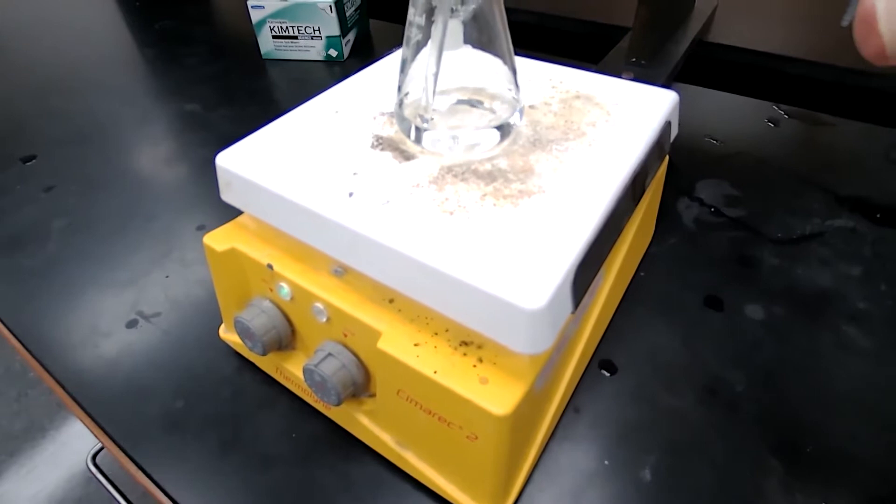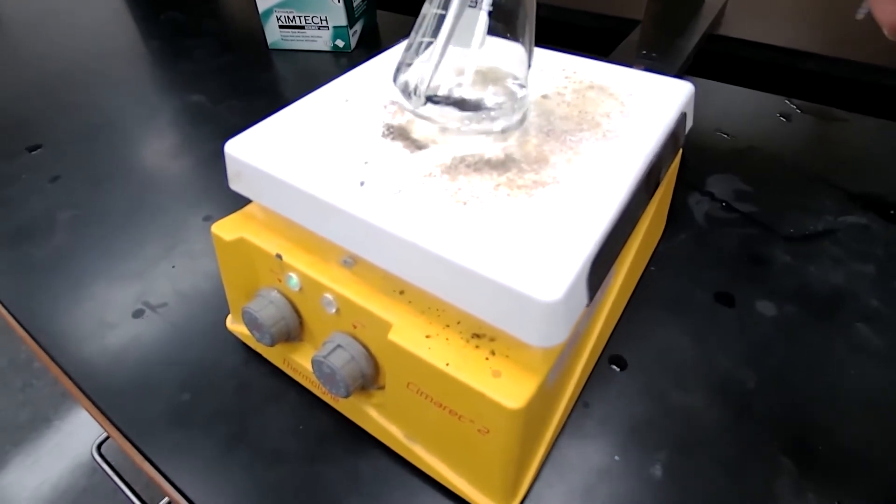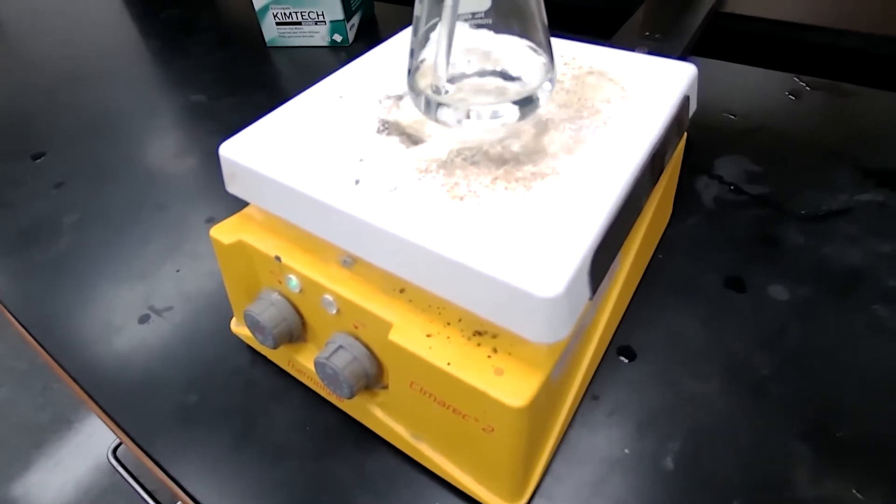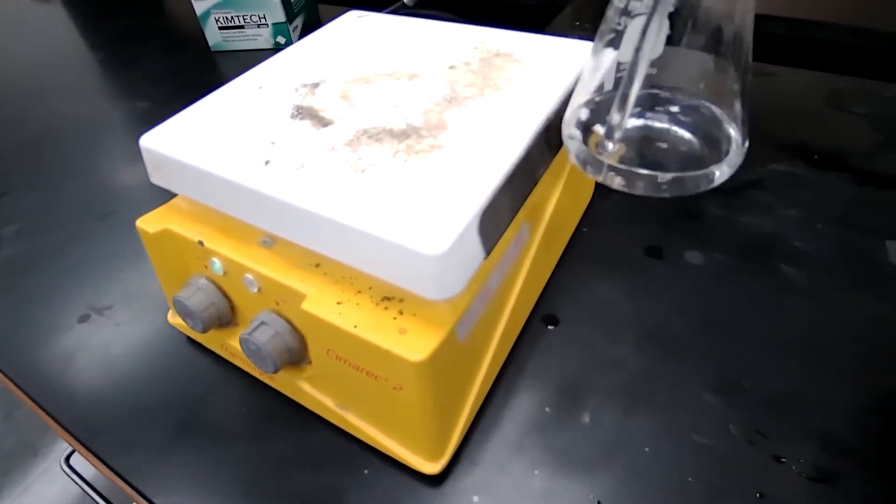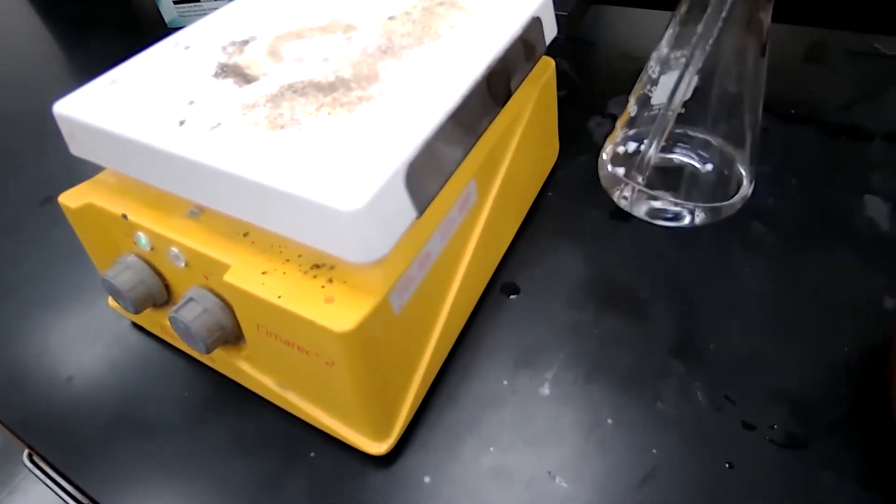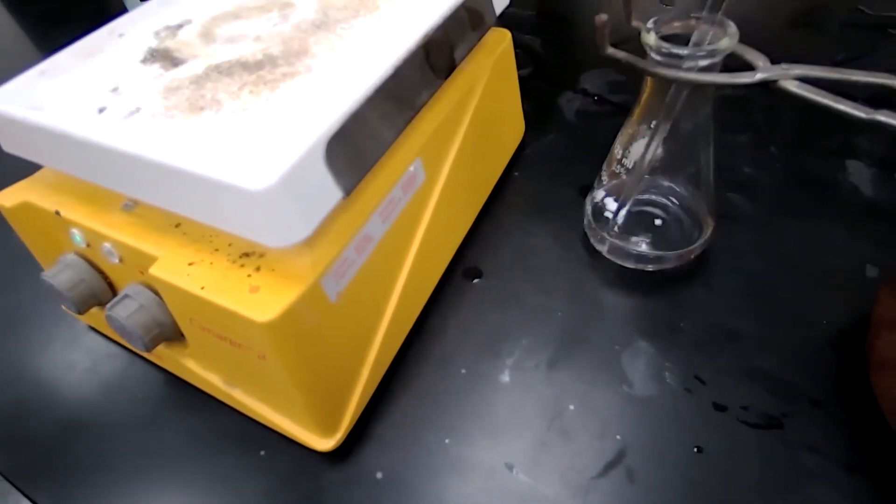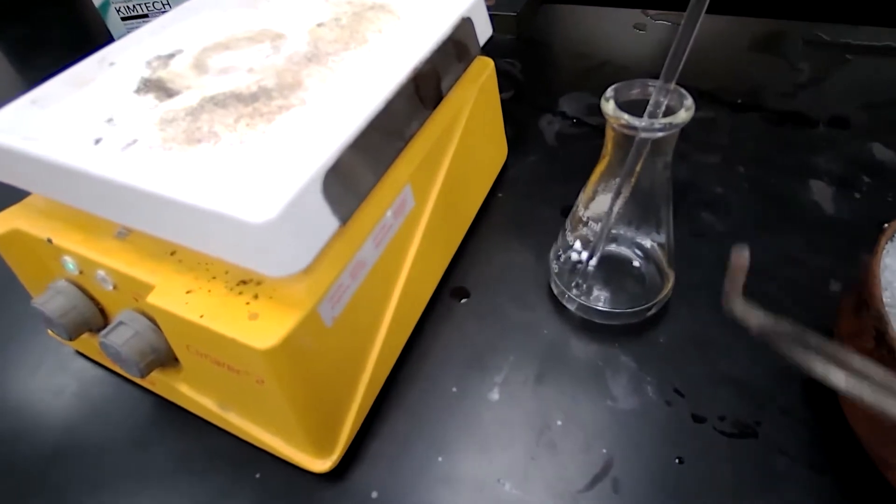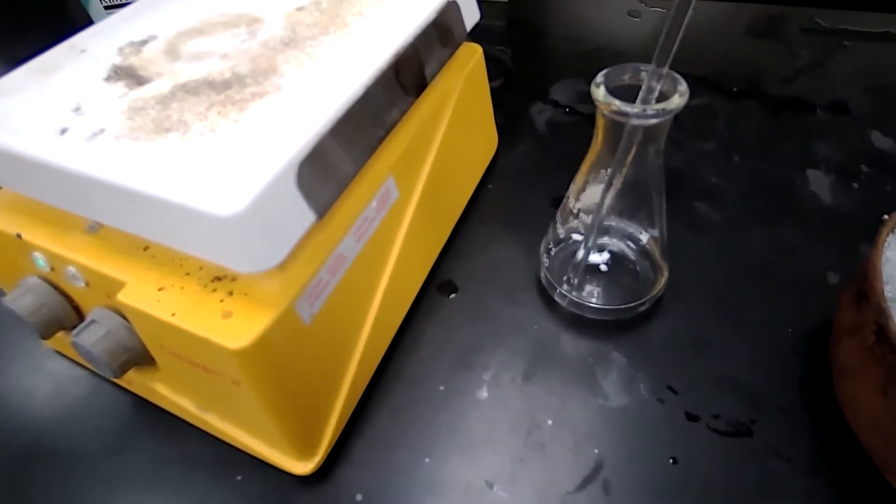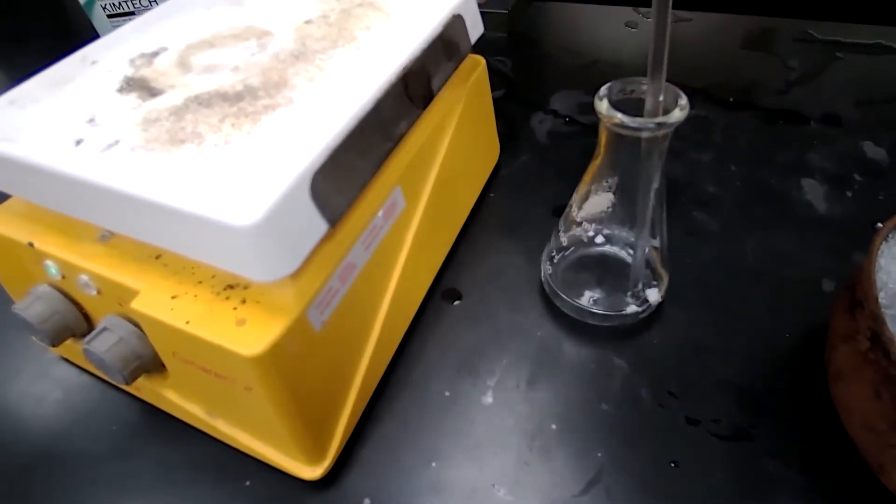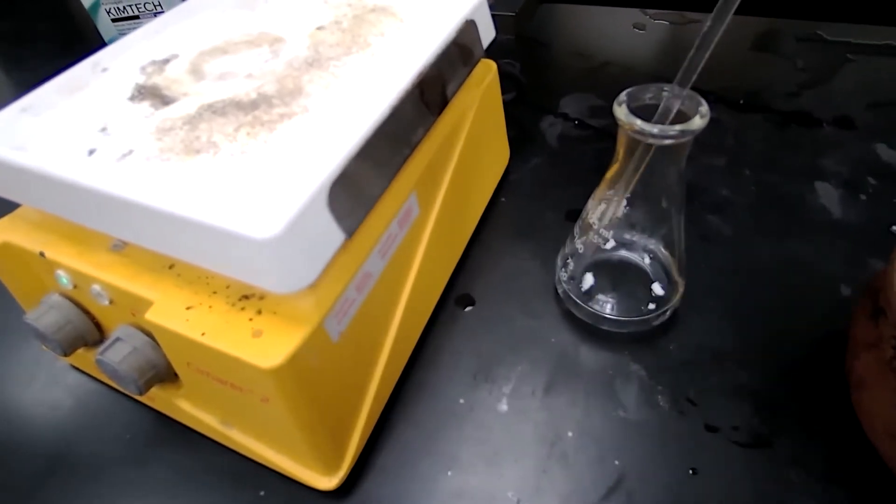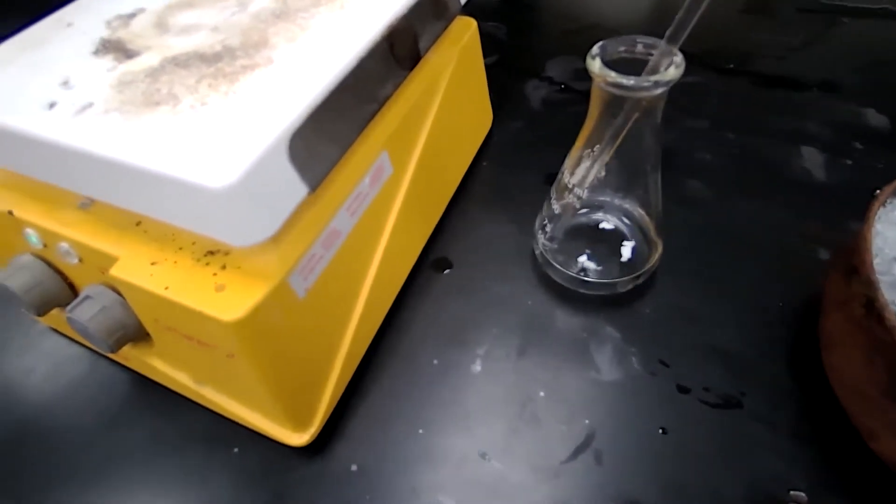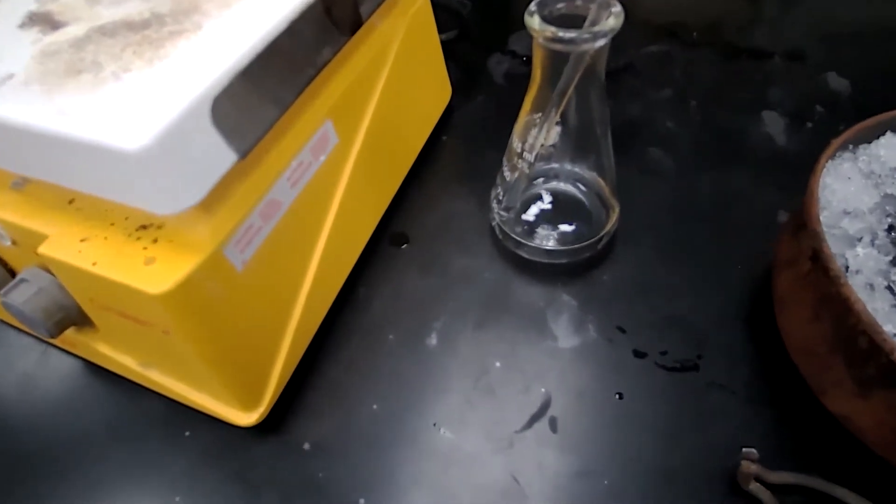I'm going to carefully use crucible tongs to remove it from the heat and place it on the benchtop for it to cool down to room temperature. You notice that there are some leftover solid pieces, but since I know those are my boiling stones that I placed in there, I'm not going to try to dissolve those. There's no way that I could dissolve the boiling stones.